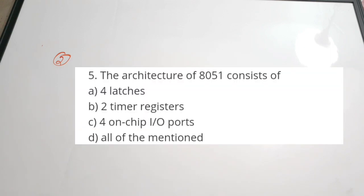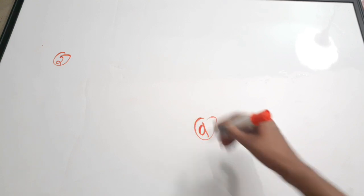The second question: the architecture of 8051 consists of — A) four latches, B) two timer registers, C) four on-chip I/O ports, D) all of the mentioned. The correct answer is D, all of the mentioned, because 8051 has four port latches, two timer registers, and four on-chip ports — all present in the architecture of 8051.